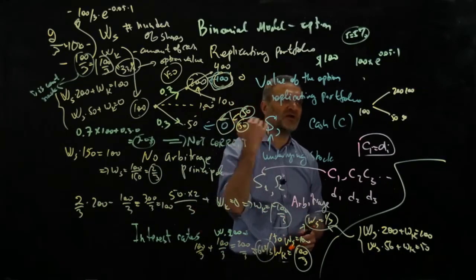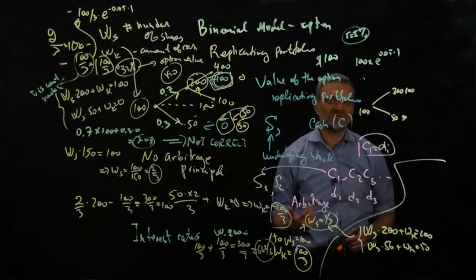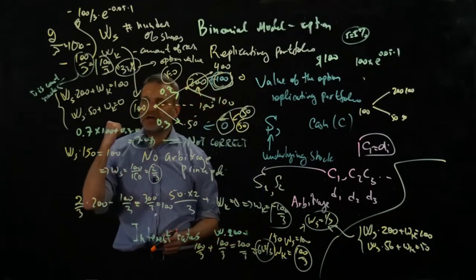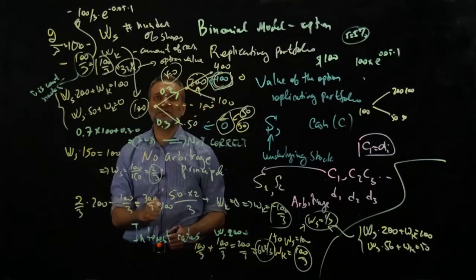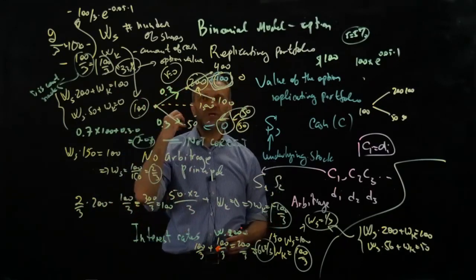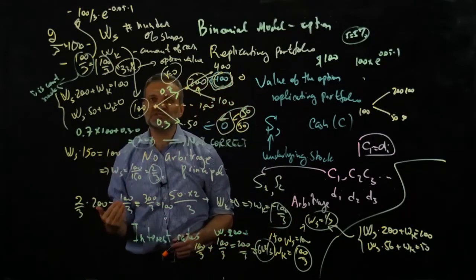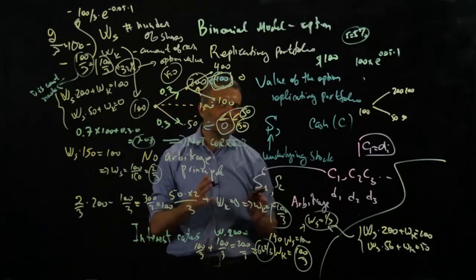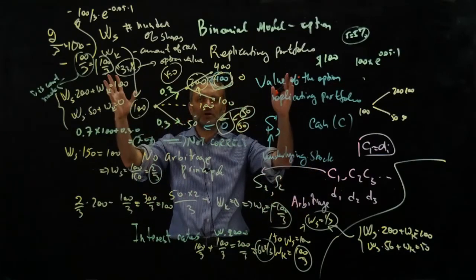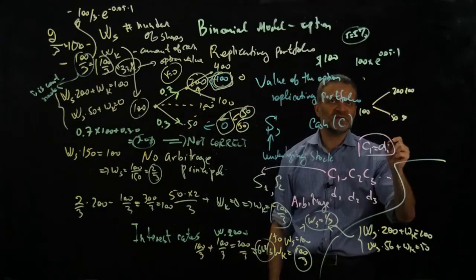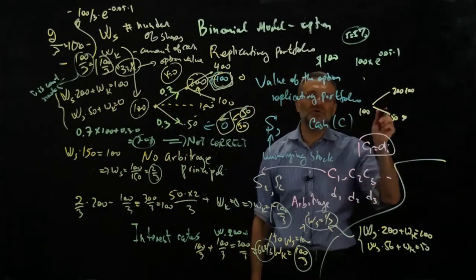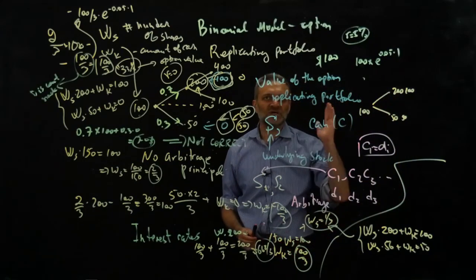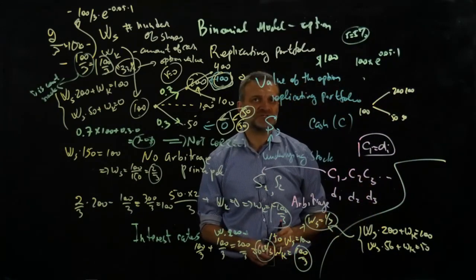This shows the replicating portfolio technique can also be used to value bonds and corporate liabilities. In fact, this was a major idea behind the Black-Scholes paper, which is actually titled 'The Valuation of Options and Corporate Liabilities.' Black and Scholes understood that corporate liabilities can be thought of as options on the value of the company. You need to open your horizons and realize this valuation technique applies not just to options, but to any instrument with random cash flows.